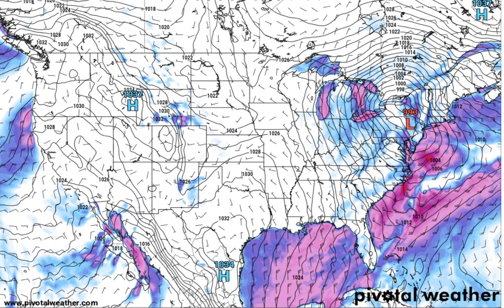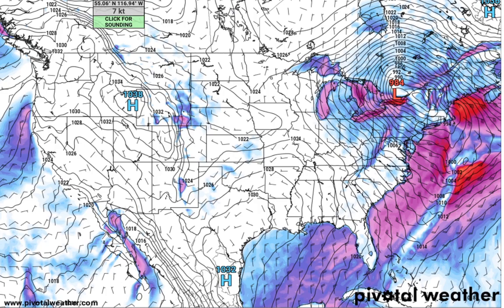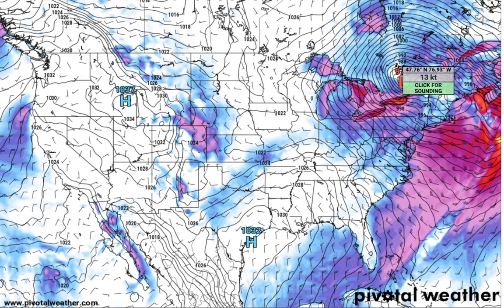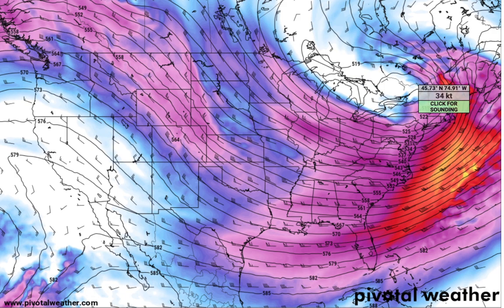Stepping forward another six hours to 7 a.m. tomorrow morning, we've got a 984 millibar surface low — dropping another nine millibars, which is 19 millibars over an 18-hour period. Going forward to 18Z tomorrow, around noon, the bottom drops out: the surface low is down to 979 millibars. Looking at the upper levels on the Pivotal Weather website — an incredible resource for high-resolution models — you have the negative trough axis continuing, but the surface low and the upper-level low are becoming vertically stacked over southern Ontario.